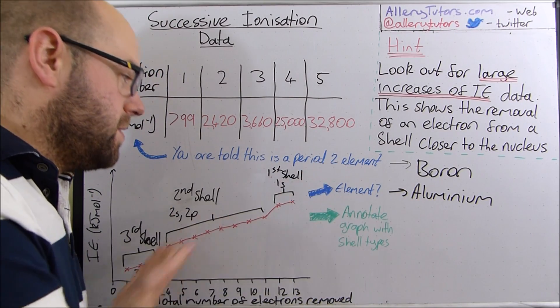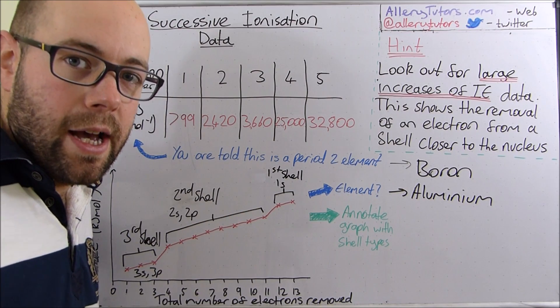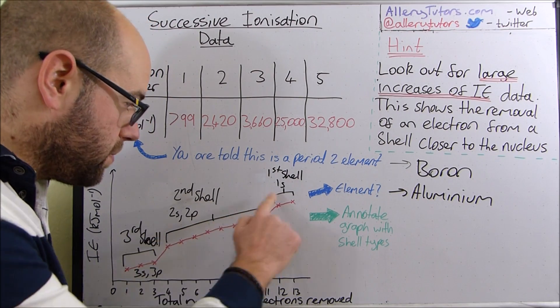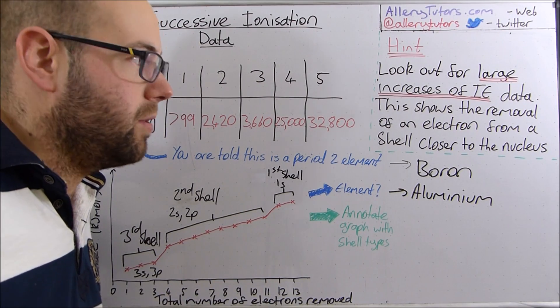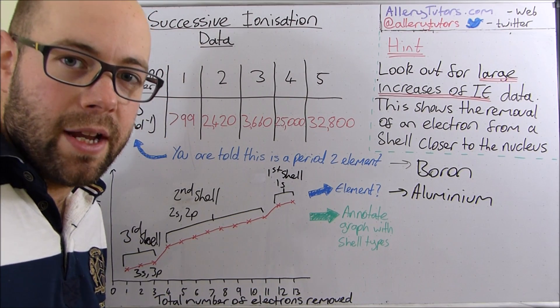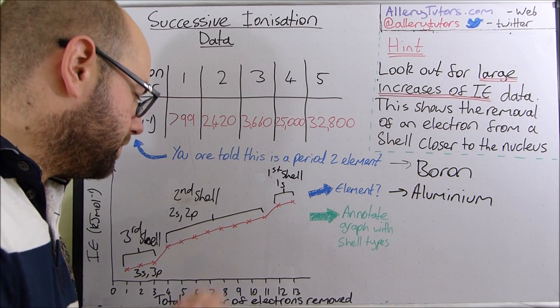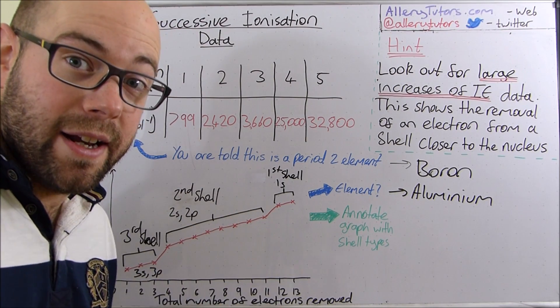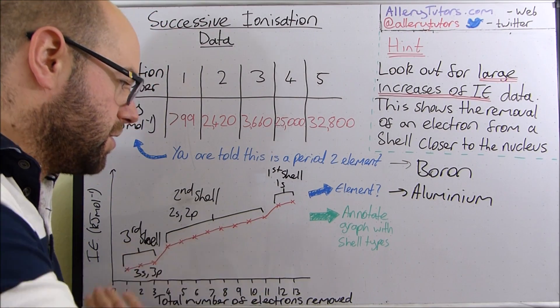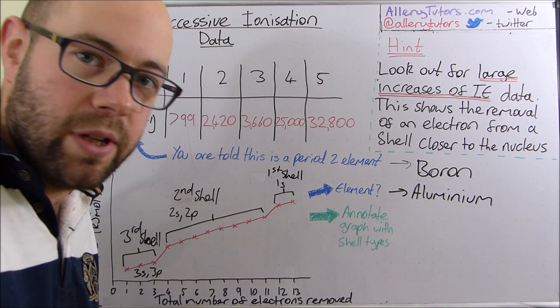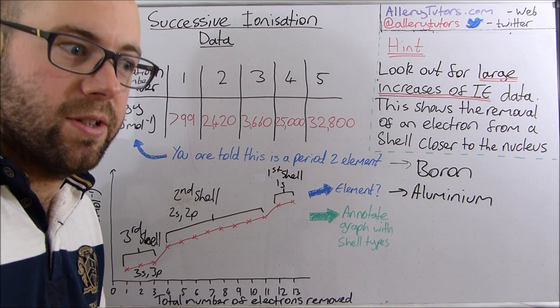We've explained the different shells, where the structure is. And we've also explained these big jumps as well. So the big jumps are because the electron is much closer to the nucleus. We therefore have a higher ionization energy because we have significantly less shielding. Or we have less shielding as we go across the period because we're removing electrons from shells which are much closer to the nucleus.